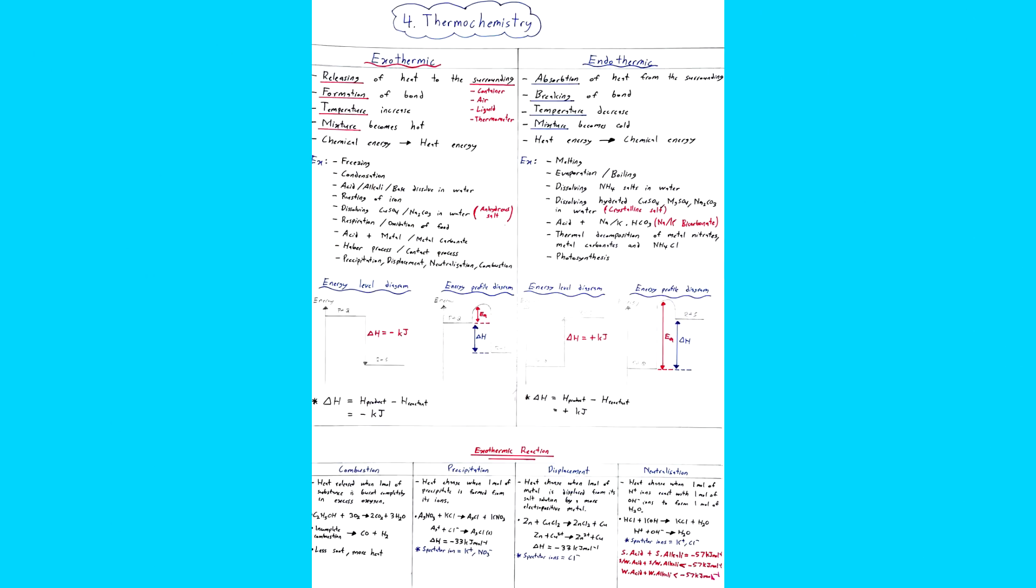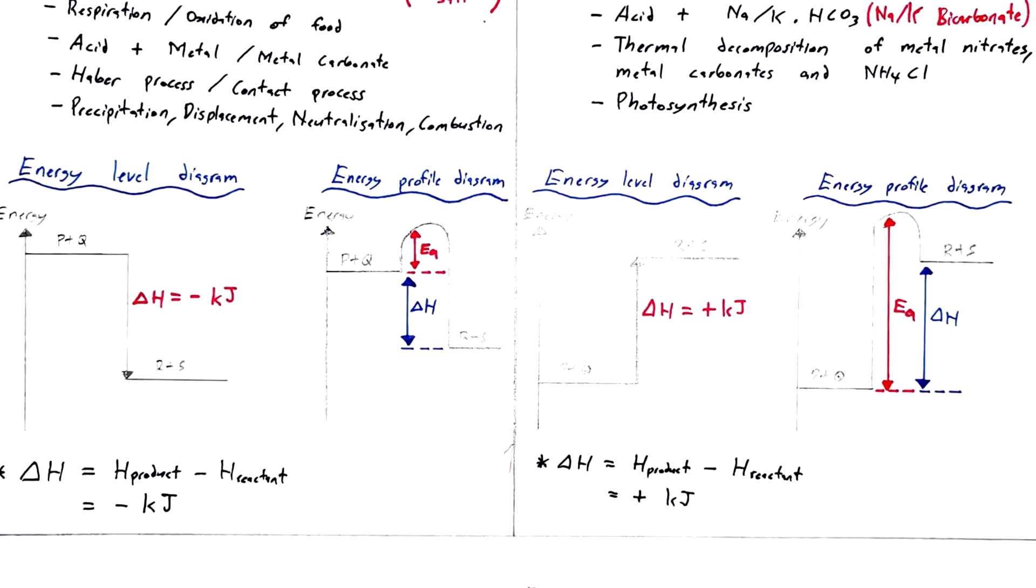Next, we got thermochemistry. There are only two types of reactions which are exothermic and endothermic. I've given all the explanations for each reaction and a lot of examples. So go through all of it and make sure you know exactly how to draw the energy level diagram and an energy profile diagram. These two are different diagrams and you need to know how to do both of them.